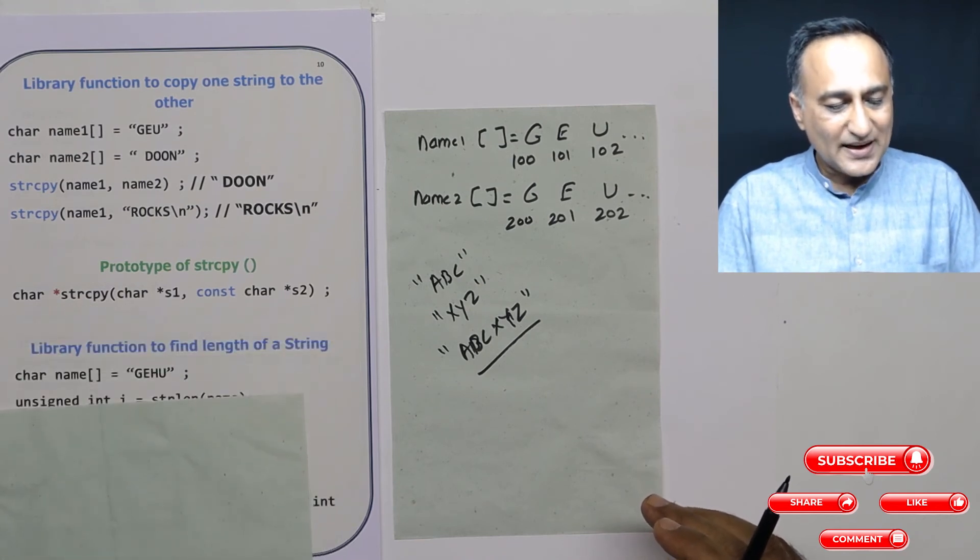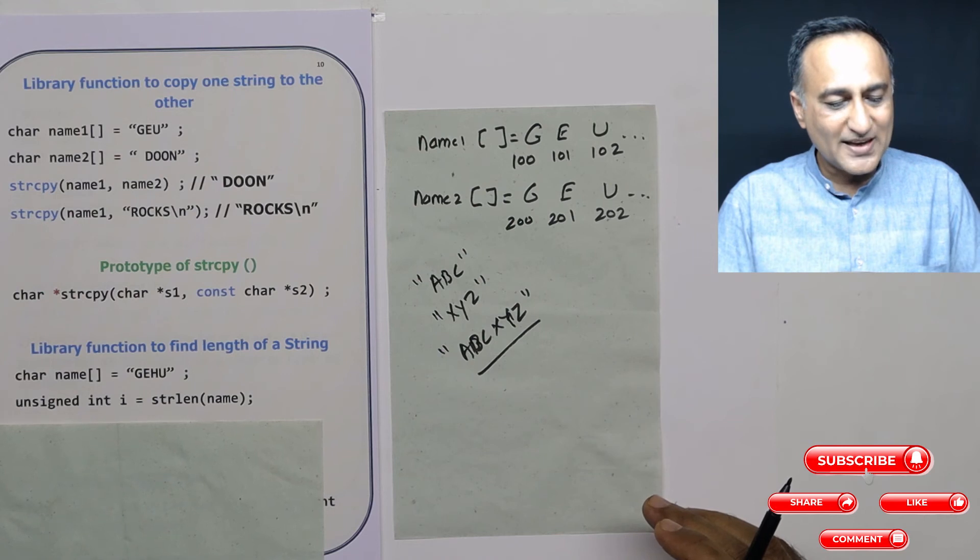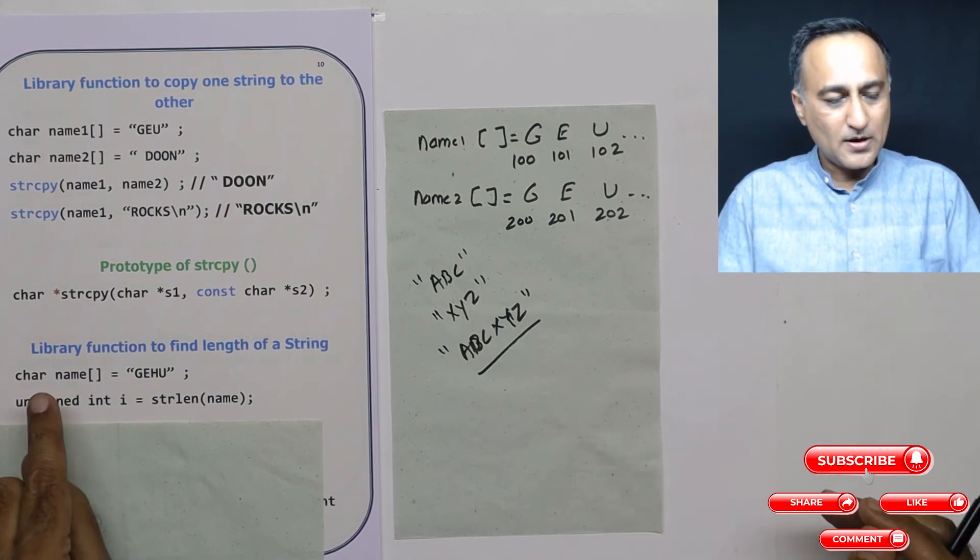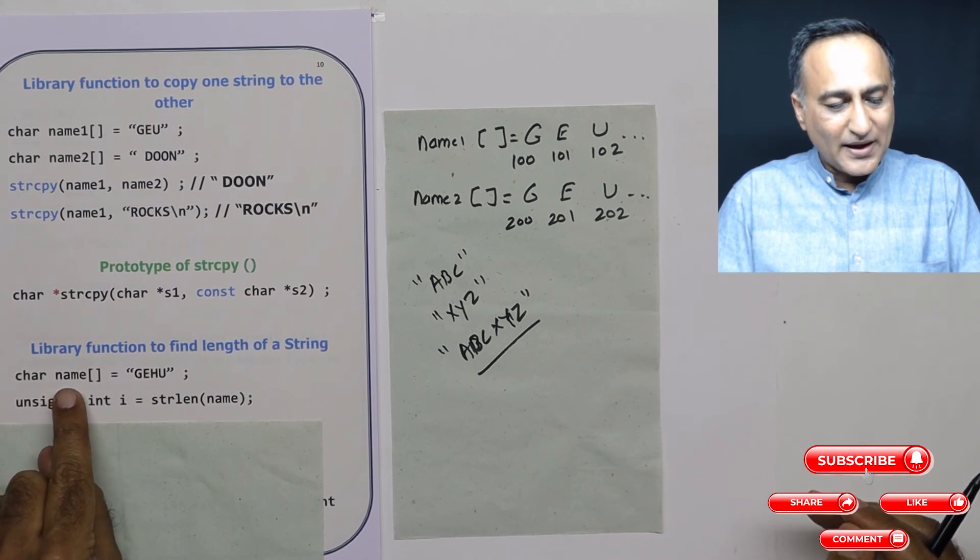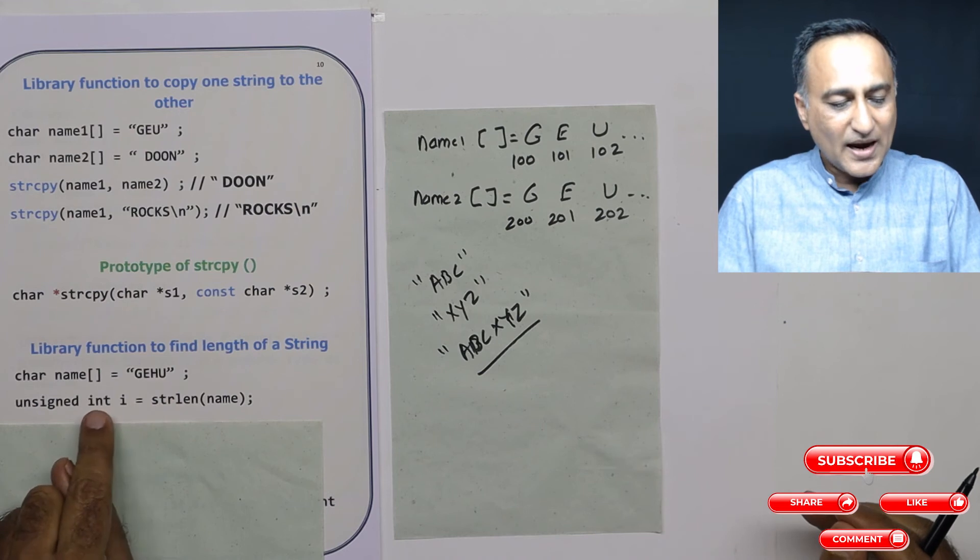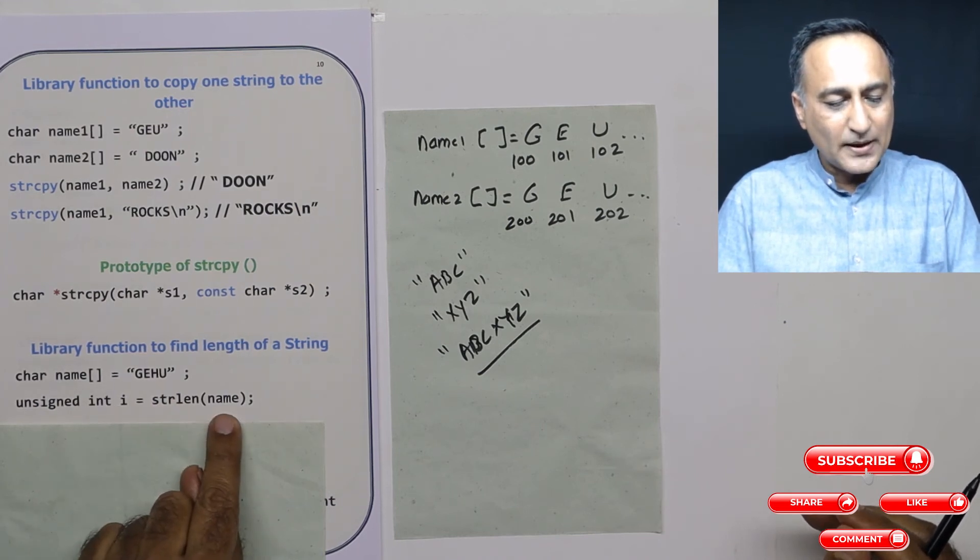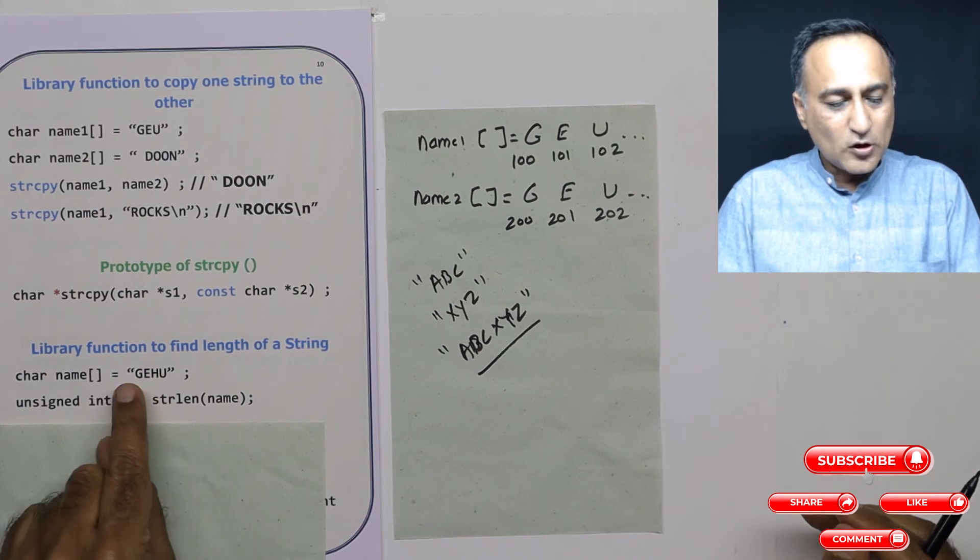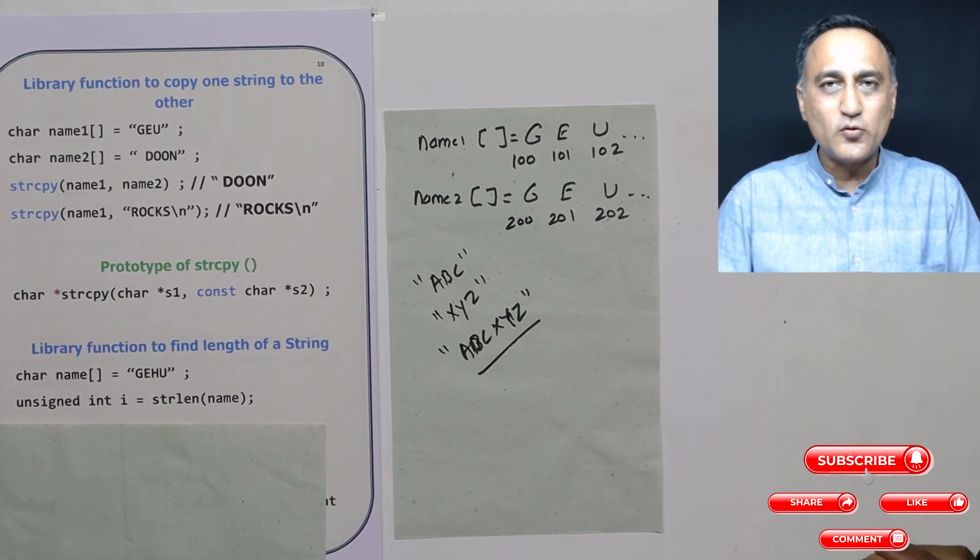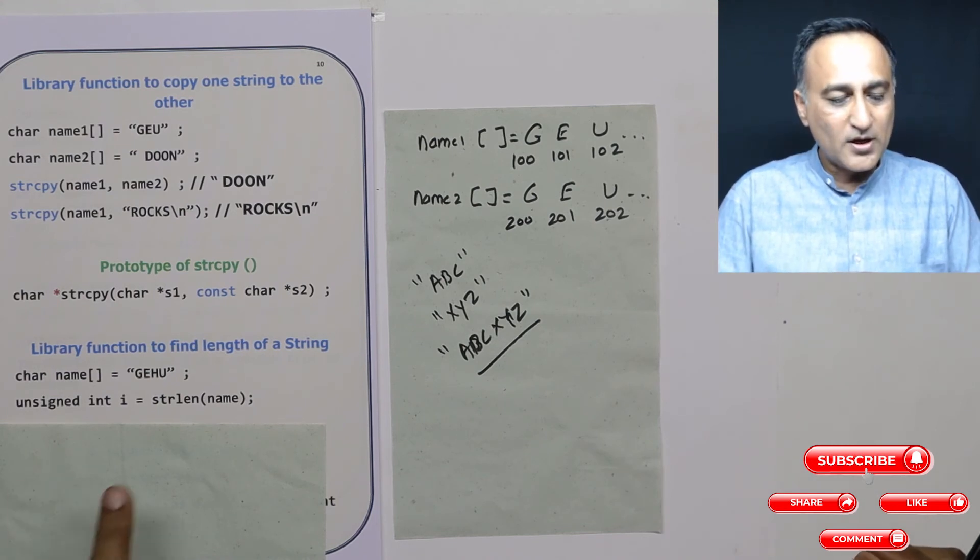Now let's take a look at another commonly used function called string length to find the length of a string. I have defined an array of characters called name with the initial value gehu. I have defined an unsigned int i and I have said string length of name. So name has got how many characters: one, two, three, four. So string length is going to return an unsigned integer value whose value is going to be four. So four is going to be assigned to i.